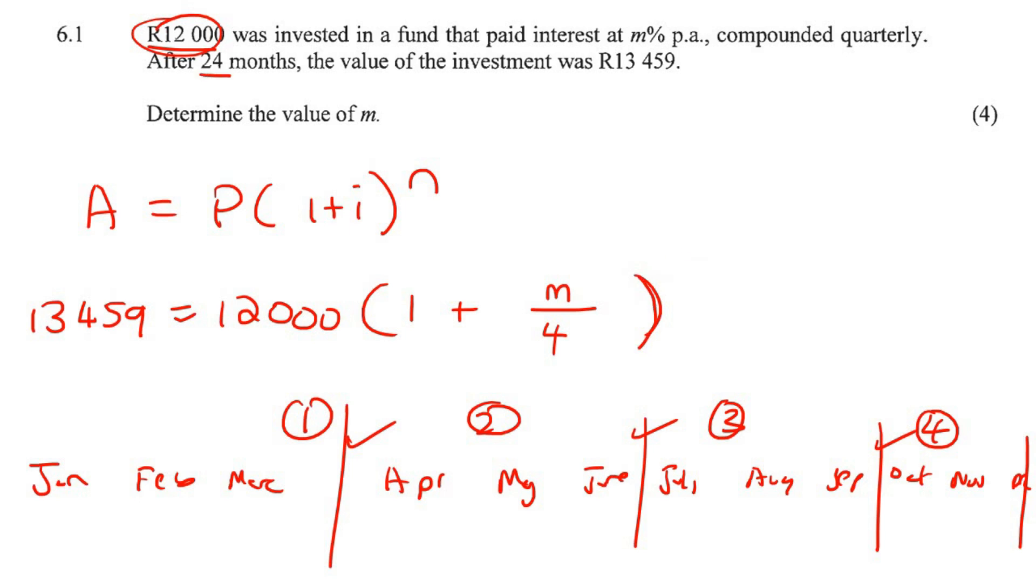Now, for this value over here, this is going to catch a lot of learners out. They said after 24 months. Now, 24 months is two years. So you could say here 2 times 4. That's what I was trying to get to. You're actually not going to use 24 at all. They're trying to confuse you. So it's two years, and each year you are compounding four times.